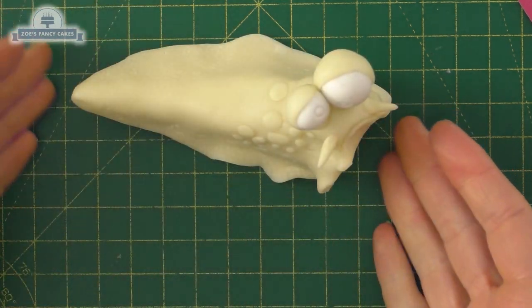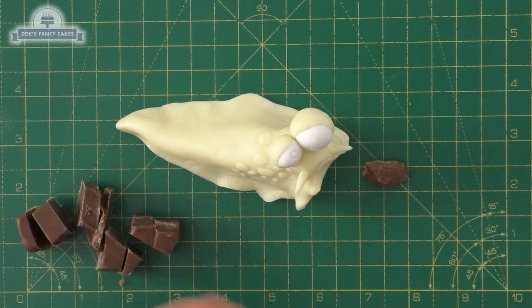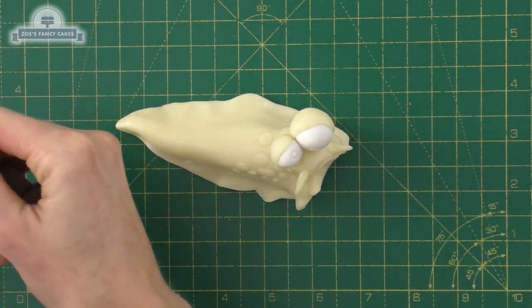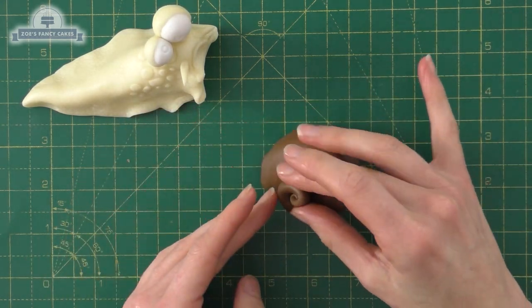I'm going to use some brown modeling chocolate now. So they're both modeling chocolate. It's just the base of him is white modeling chocolate, and we're going to do the shell in brown modeling chocolate. So I'm just going to roll a long cone shape, and we're going to kind of roll that up for this shell.